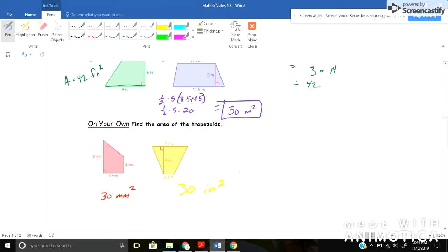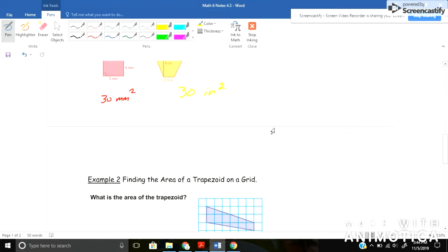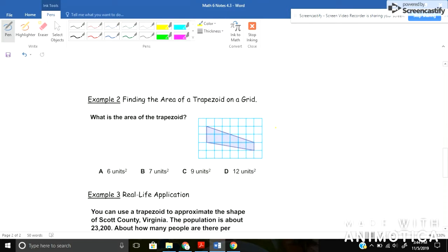And then for the second one you should come up with a total also of thirty inches squared. Okay, so you've got thirty for both of them. All right, let's try that then when we have a grid that we're working with.